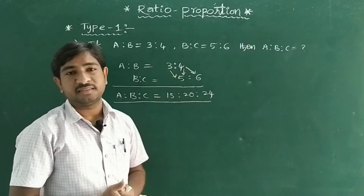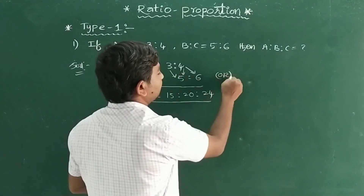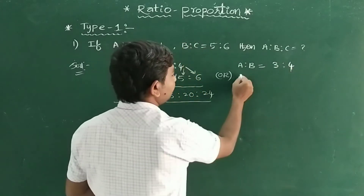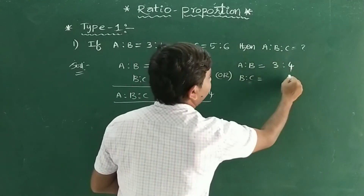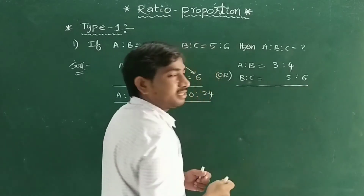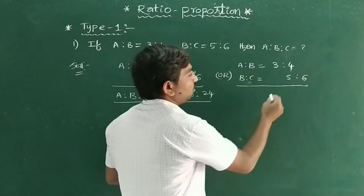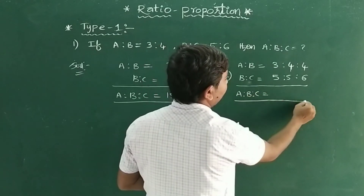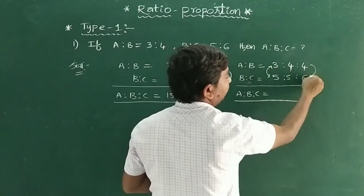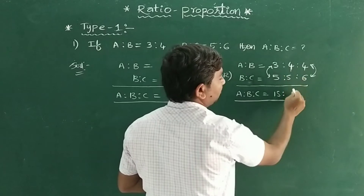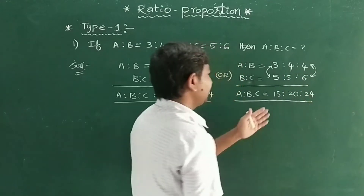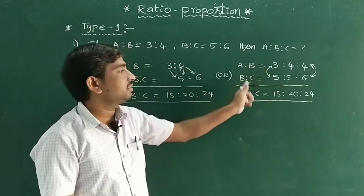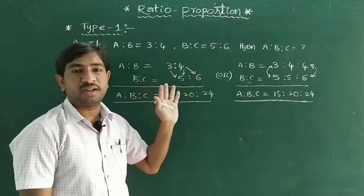Now let me explain an even easier second method. Write A:B = 3:4 as it is, and B:C = 5:6. Write the right-side value (4) and the left-side value (5) in position, then multiply: 3×5=15, 4×5=20, 4×6=24. You get the same answer. You may get confused with different numbers but it is very easy.